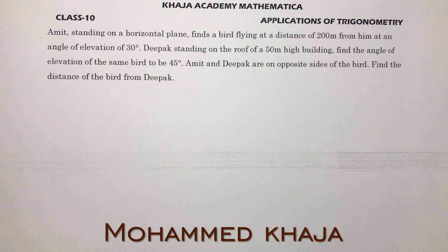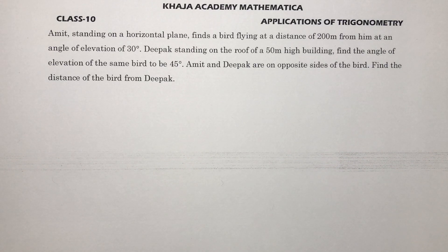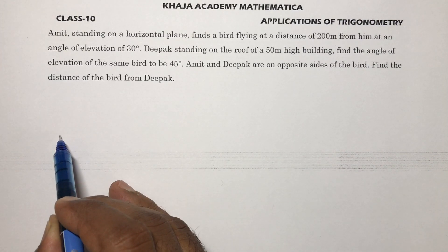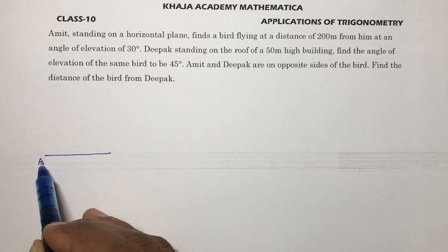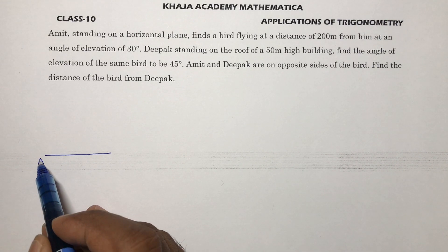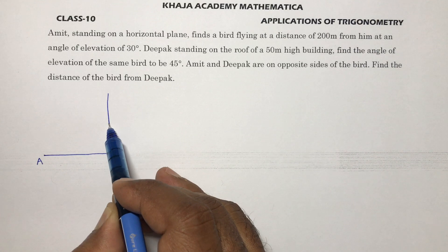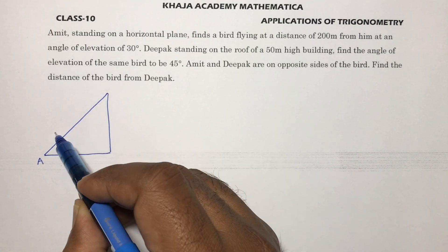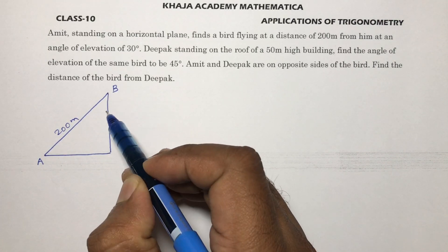Class 10th important problem from applications of trigonometry. Amit is standing on a horizontal plane and finds a bird flying at a distance of 200 meters from him at an angle of elevation of 30 degrees. So this distance is 200 meters and the bird is over here at point B.